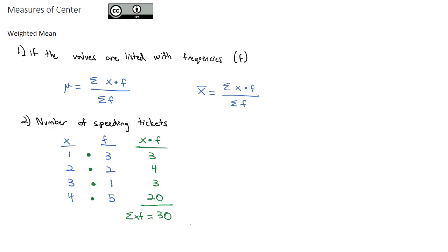In the denominator we also need to know what the sum of the frequency is. So we'll add up the frequencies to get 2 plus 3 plus 1 plus 5, which is 11.